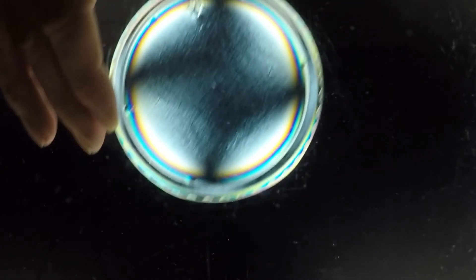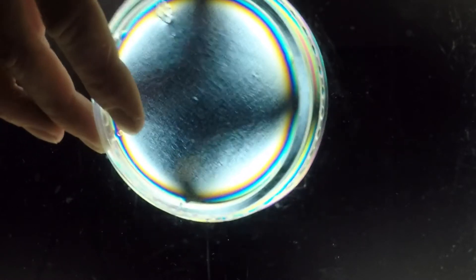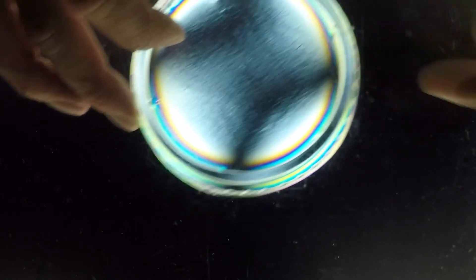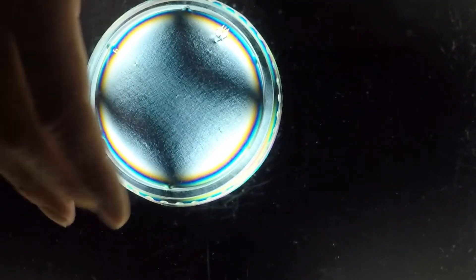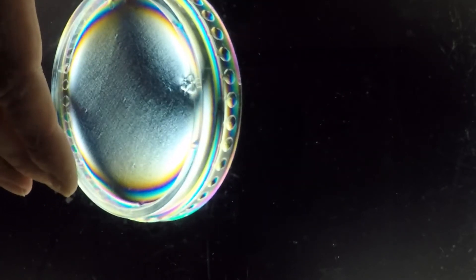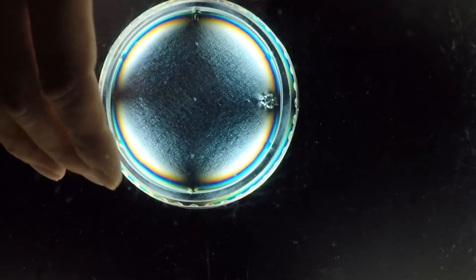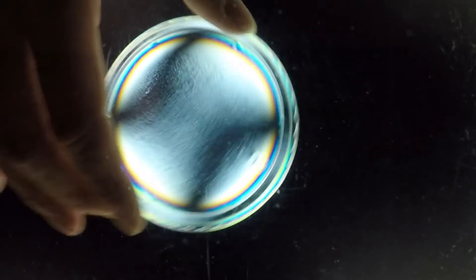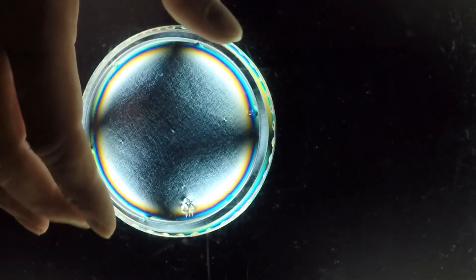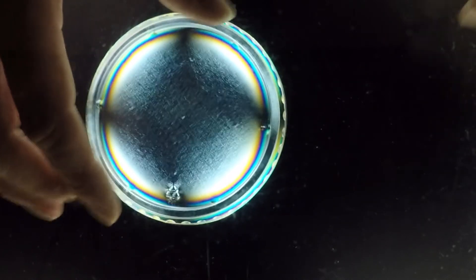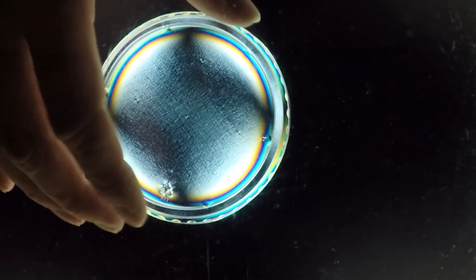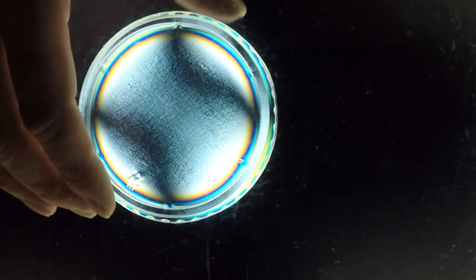Here I have an ordinary piece of a lid from maybe yogurt or something like this, and you see that this plastic that they use, because it is drawn in the process, also has a lot of this birefringence because these are very long chain molecules that are drawn and therefore oriented in a certain way, and then you get birefringence here.